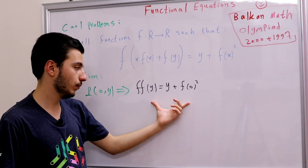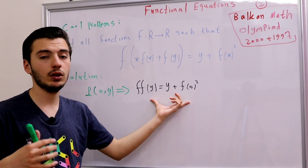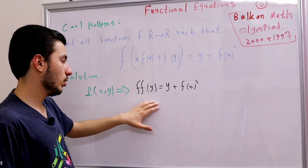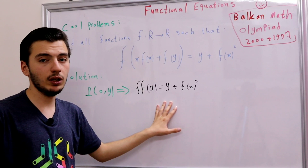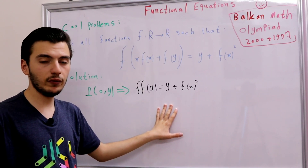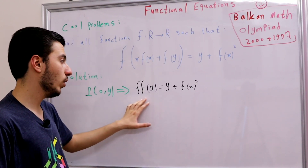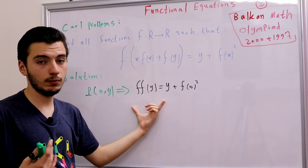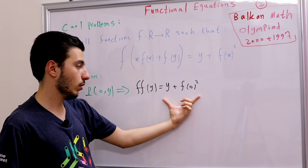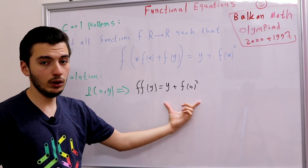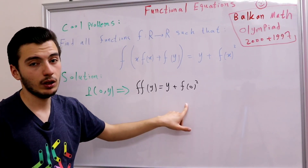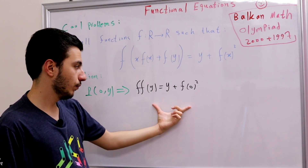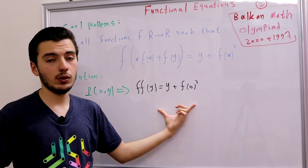From the same relation we can also show that our function is injective. If f(a) = f(b), then f(f(a)) = f(f(b)), which means the left-hand sides are equal, so the right-hand sides are equal, giving a = b. So if f(a) = f(b), then a = b — our function is injective.